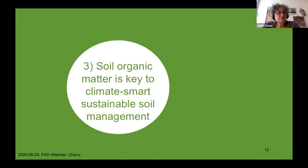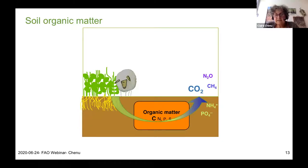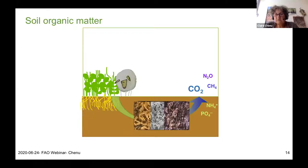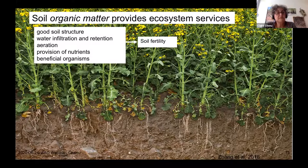One key message is that soil organic matter is key to climate-smart, sustainable soil management. Soil organic matter comes from the decomposition of plant biomass and microbial and animal residues. Its decomposition leads ultimately to mineralization with elements being released. Organic matter is extremely heterogeneous, being made of plant and animal residues, living organisms, and a range of molecules and organic particles.